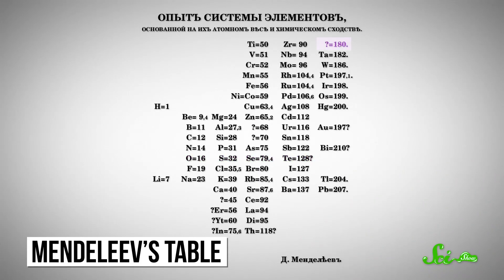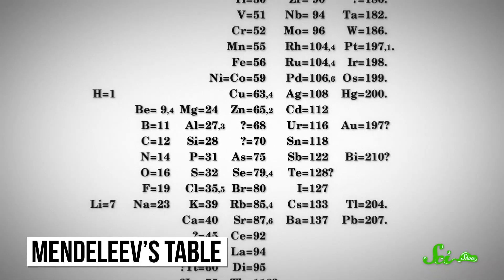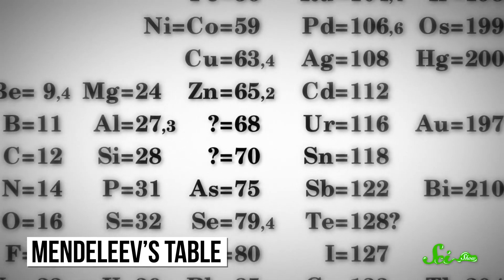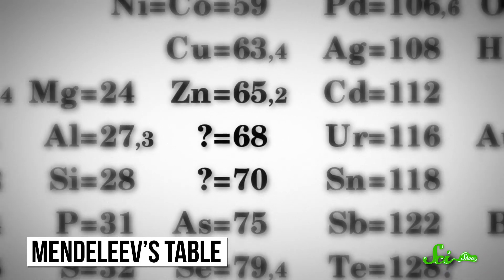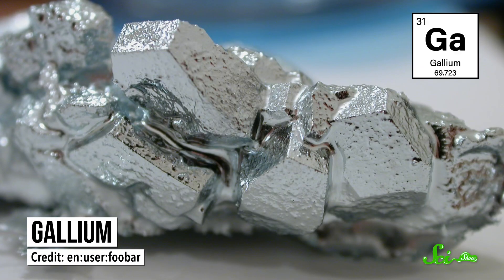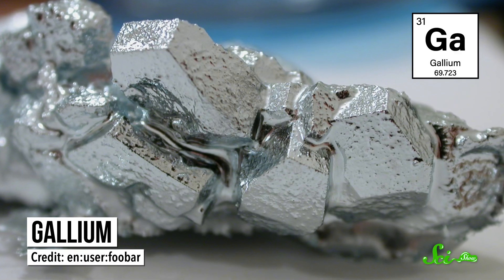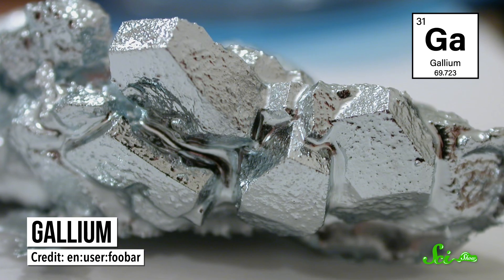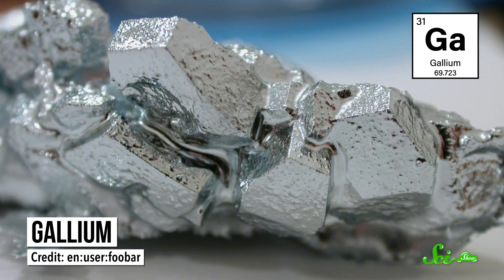Mendeleev's great breakthrough was to leave space for elements not yet discovered. Based on where they should be, he made specific predictions about never-before-seen substances. He said, for instance, that chemists would soon find an element neighboring aluminum with an atomic mass around 68 and a very low melting point. In 1875, gallium was discovered — a metal with an atomic mass of 69.7 and such a low melting point that pranksters use it to make trick spoons.